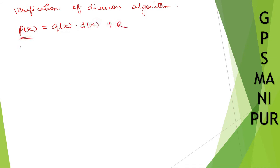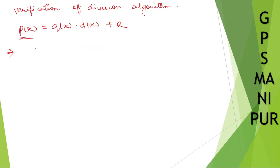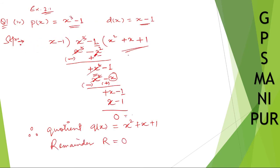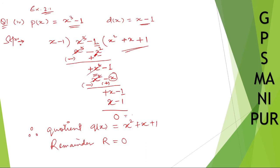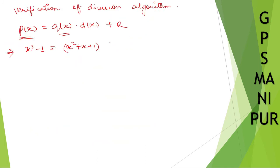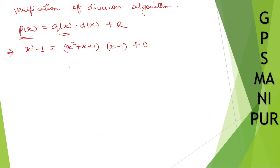P of x is given in the question, which is x cube minus 1. Q of x is x square plus x plus 1. D of x is x minus 1. The remainder is 0.